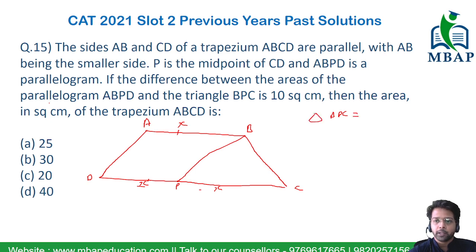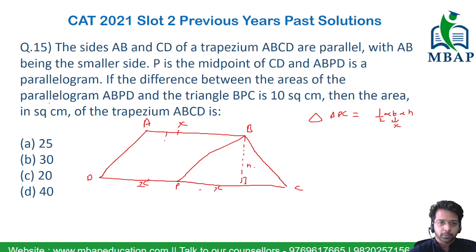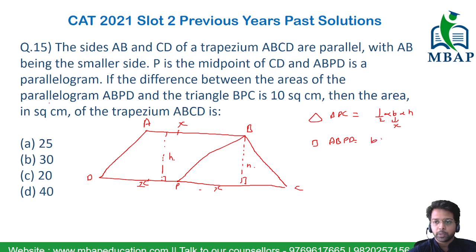Now, if you have to find the area of triangle BPC, it's going to be half × base × height, where the base is X and the height is H. Similarly, if I draw the perpendicular for the parallelogram, the height will also be H — the same height. The area of parallelogram ABPD will be base × height, which is X × H.